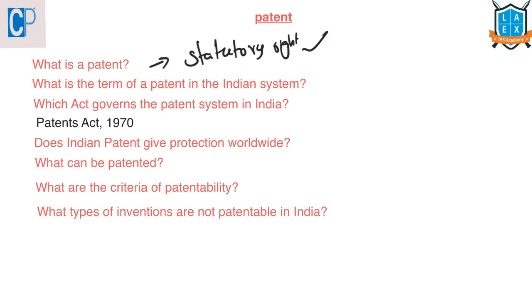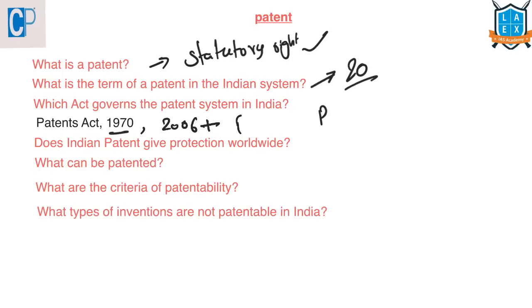The term of every patent granted is 20 years from the date of filing the application. The Patents Act of 1970, which was amended in 2006, and the Patent Rules of 2013 govern the patent system in India.